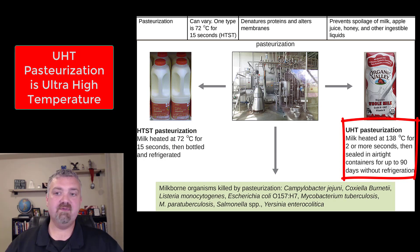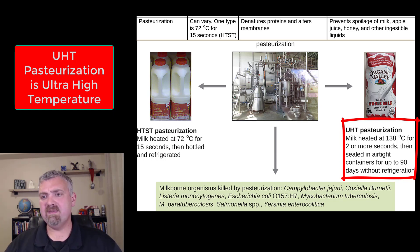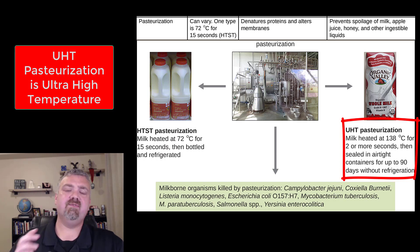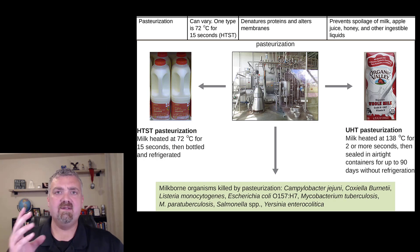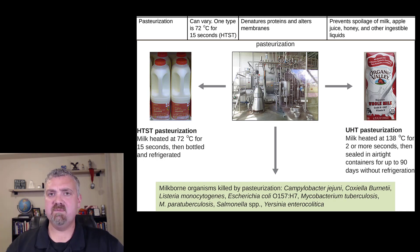A lot of military bases use ultra high temperature pasteurized products. Some other countries — I've had students from Germany say it's much more common there — and you can certainly find these products in the US as well. So those are the three types of pasteurization: stovetop, HTST, and UHT. Don't worry about the specific numbers — just remember that as temperature goes up, the required time goes down.